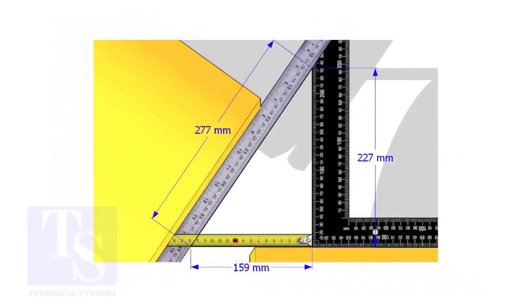Assume that these are the dimensions. Let us calculate the including angle. If you apply the sine rule, the angle will be 159 divided by 277 shift sine.